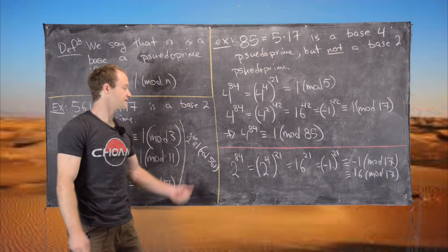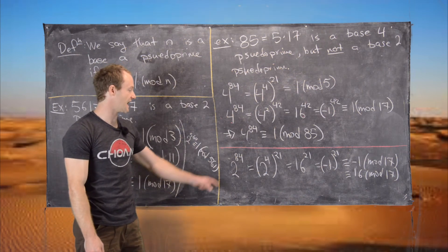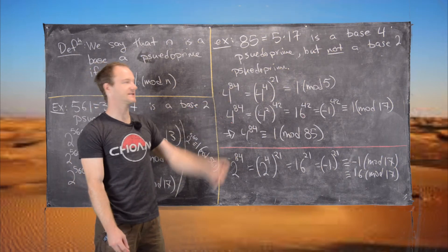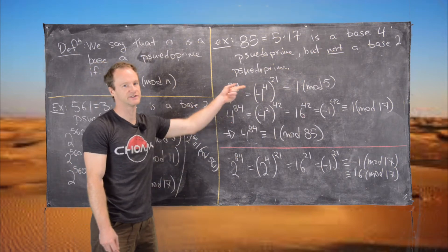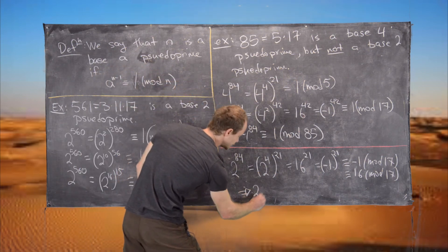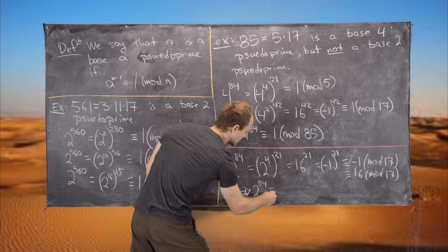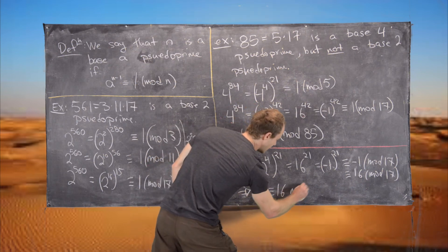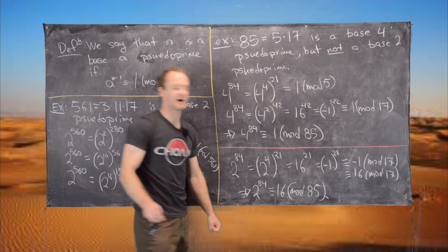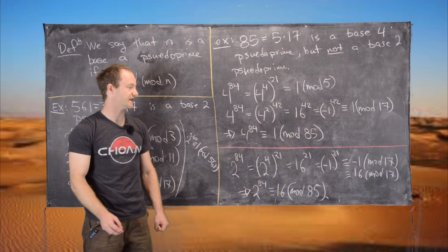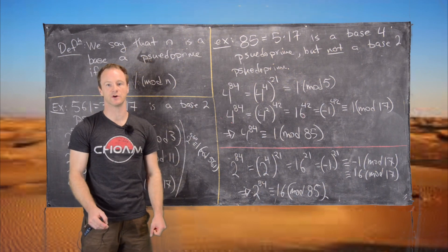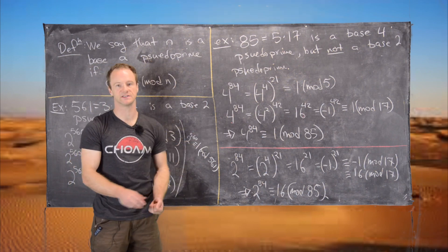You can check that 2 to the 84 is congruent to 1 mod 5 using the same Fermat's Little Theorem trick. But putting it all together, 2 to the 84 is congruent to 16 mod 85, which is not 1 mod 85. So 85 is not a base-2 pseudoprime. That's the end of these examples.